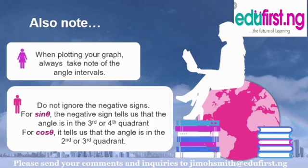You should also note that when plotting your graph, always take note of the angle intervals. And do not ignore the negative signs. For sine theta, the negative sign tells us that the angle is in the third or fourth quadrant. While for cos theta, it tells us that the angle is in the second or third quadrant.